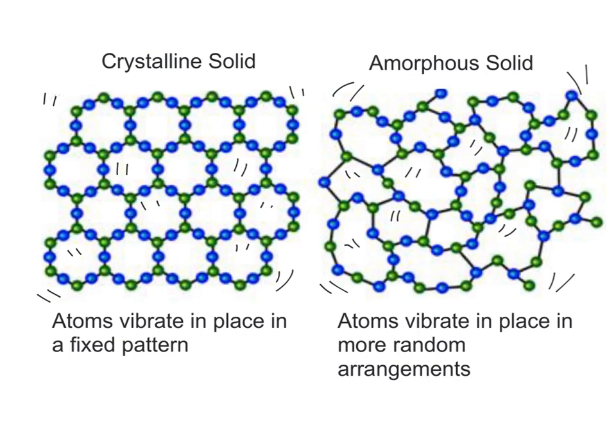Hi guys, so a lot of you wanted to know the difference between crystalline and amorphous solids. Basically, all solids have this in common: the atoms are vibrating in place. The difference between a crystalline solid and an amorphous solid is just how regular the pattern is that the atoms are sort of frozen into.